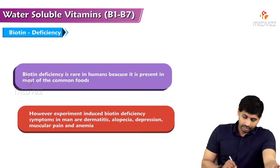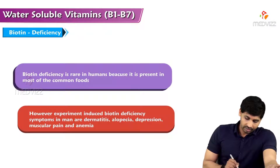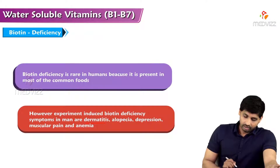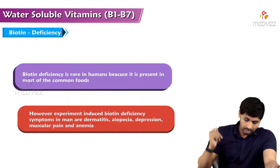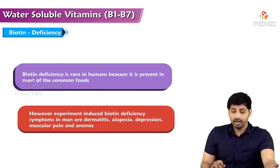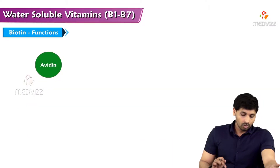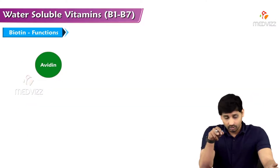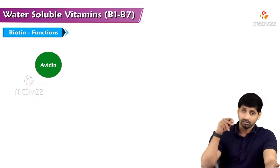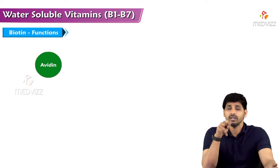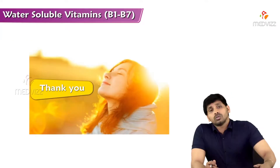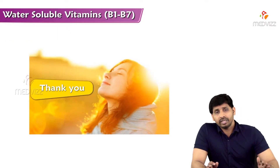In experimental animals, raw egg white induces biotin deficiency. Symptoms include dermatitis, alopecia (hair loss), depression, muscular pain, and anemia. Avidin is the substance which prevents the absorption of biotin from the intestine. That's all about biotin. Thanks for listening.